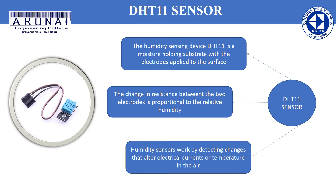DHT11 sensor: It is a low-cost sensor for sensing temperature and humidity. The sensor can be easily interfaced with any microcontroller such as Arduino, Raspberry Pi, etc. to measure humidity and temperature instantaneously. Working principle: The DHT11 sensor consists of a capacitive humidity sensing element and a thermistor for sensing temperature. The humidity sensing capacitor has two electrodes with a moisture-holding substrate as a dielectric between them. Change in the capacitance value occurs with change in humidity levels. The IC measures and processes this change in resistance values and converts them into digital form.